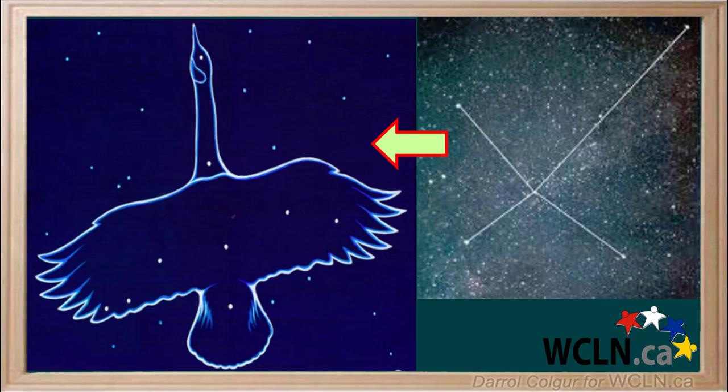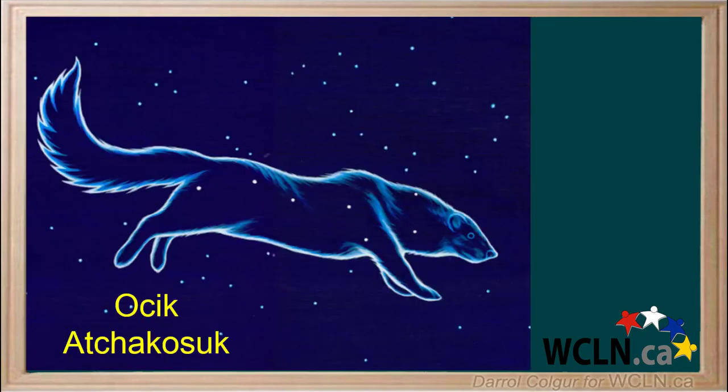This is a First Nations constellation called Niska, the goose. Here's another First Nations constellation. The animals and objects pictured in constellations have played a central role in myths and stories passed down through the ages.